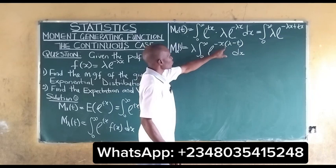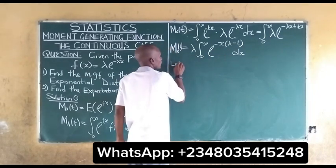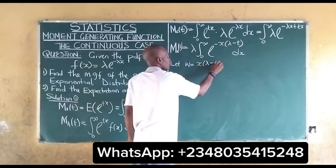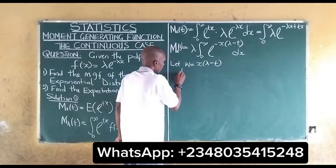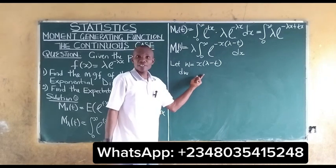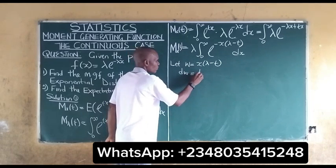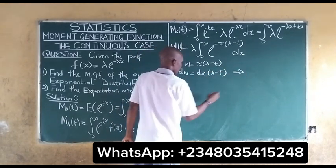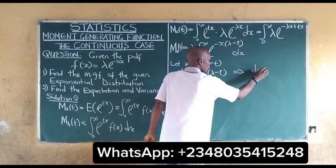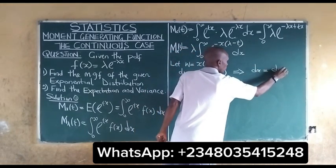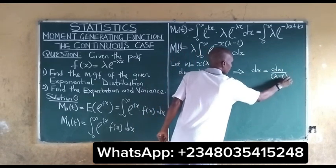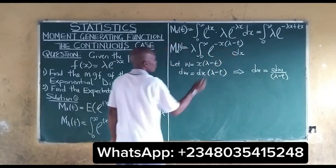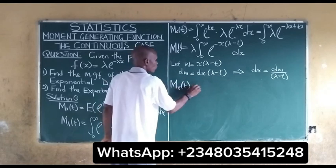The next step is to use a change of variable technique. Let w be equal to x(λ − t). It then means that dw equals (λ − t) dx, which implies that dx equals dw all over (λ − t). We substitute this into the moment generating function.